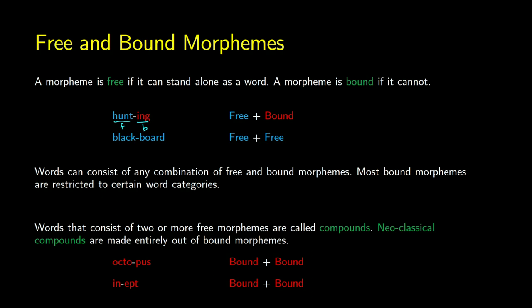You can even get two free morphemes back to back — 'blackboard' is an example: you can say 'black', you can say 'board', and you can put them together. Some words in English are made just of bound morphemes, usually because historically those words were free but lost their free use over time. For example, 'octopus' literally means eight appendages — 'octo' and 'pus' can't be said on their own, but you can put them together. 'Inept' is another example: 'in' means not, and 'ept' is a form that lost its free use. These are called neoclassical compounds — new compounds built from classical words.